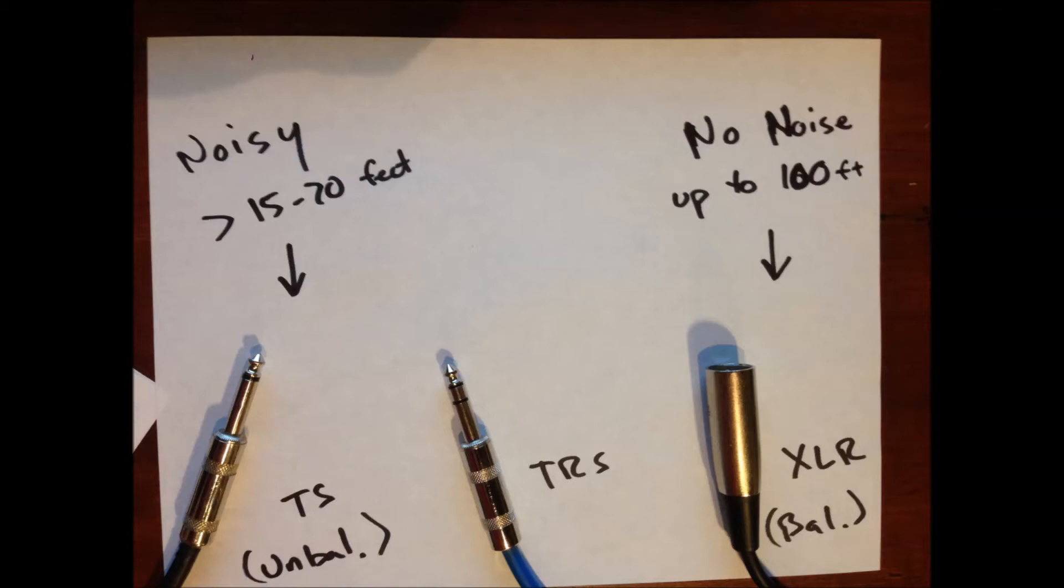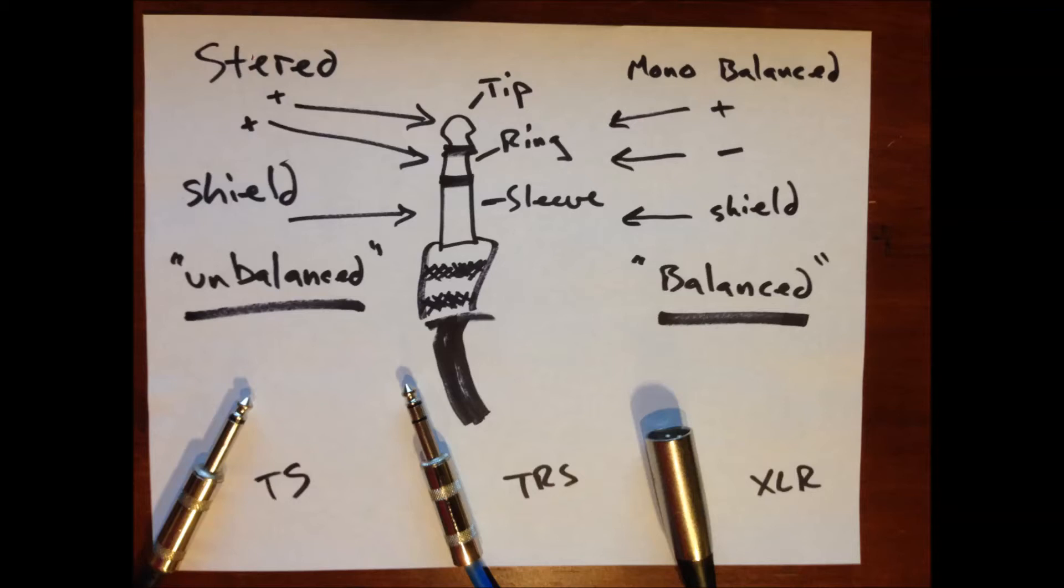So what about TRS cables then? TRS cables have three parts of the actual jack: the tip, the ring, and the sleeve. The sleeve is the shielding of the cable itself that the TS cable has, and the XLR cable has as well. However, if you want to use it as a stereo cable, the tip and the ring essentially function as left and right.